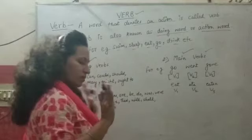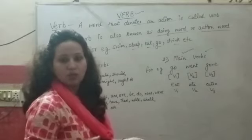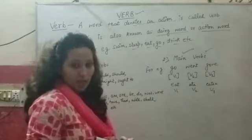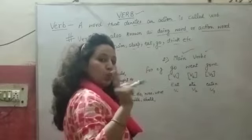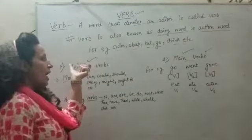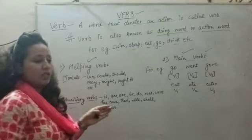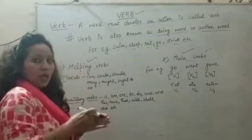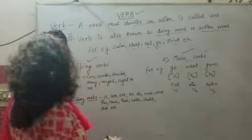Now we have learned what a verb is. Whatever work we are doing is a verb. We call the verb 'action word' and 'doing word.' Helping verbs come after the subject, and it is important to know the position of the subject. The helping verb comes with the main verb.